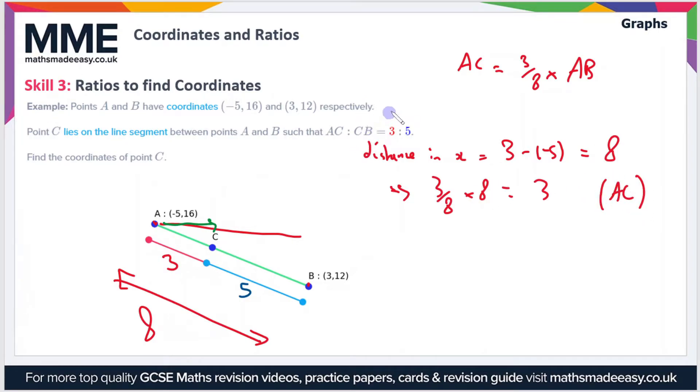Now we're in a position to work out the x-coordinate of C. To do that, we just add this value of 3 onto the x-coordinate of A, so that's -5 plus 3, which equals -2. That is the x-coordinate of C.